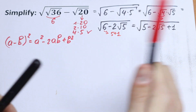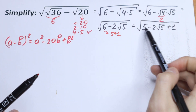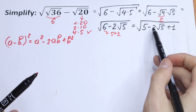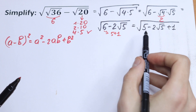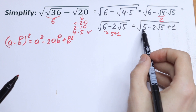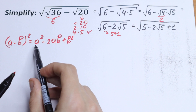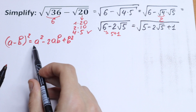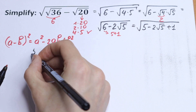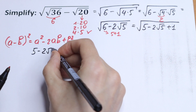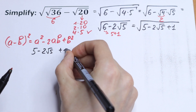What are we going to do next? This is a little trick right here, and I'll show you why I use it a little bit later. Let's write this under the square root sign using the formula: 5 minus 2 times the square root of 5, plus 1.